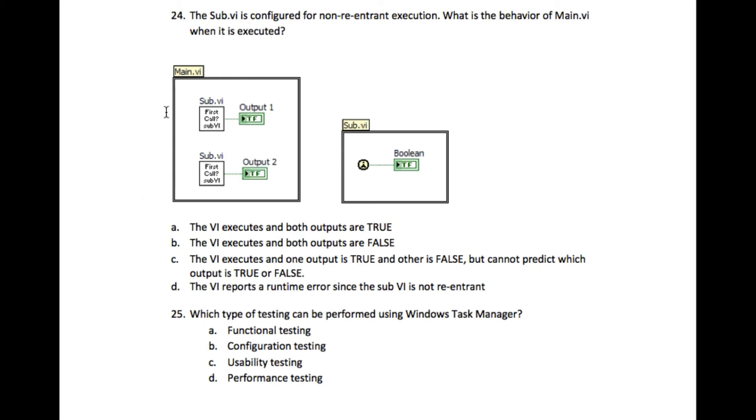But we can never determine which of the copy is going to run first. So in this case, since the sub-VI has got the first call function within it, when the VI is run first, the first call is going to return true, and in the second call it is going to return false.